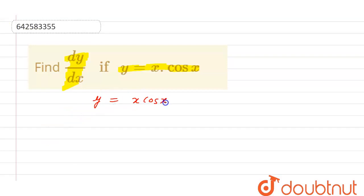For this differentiation, we need to use the u into v product rule. The product rule says: u as it is times differentiation of v, plus differentiation of u times v as it is.